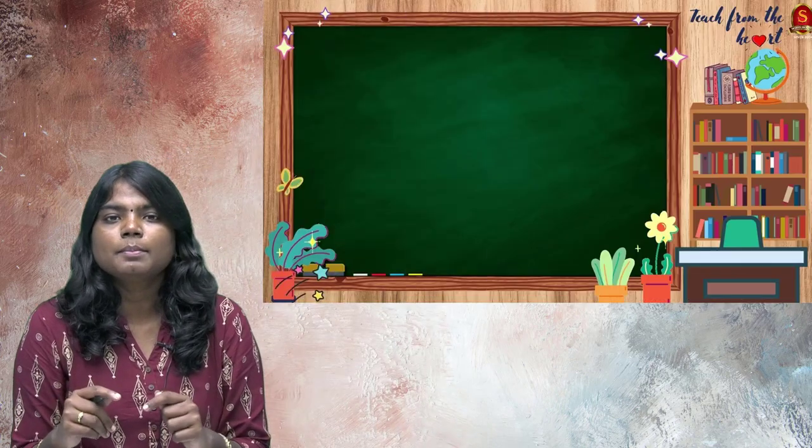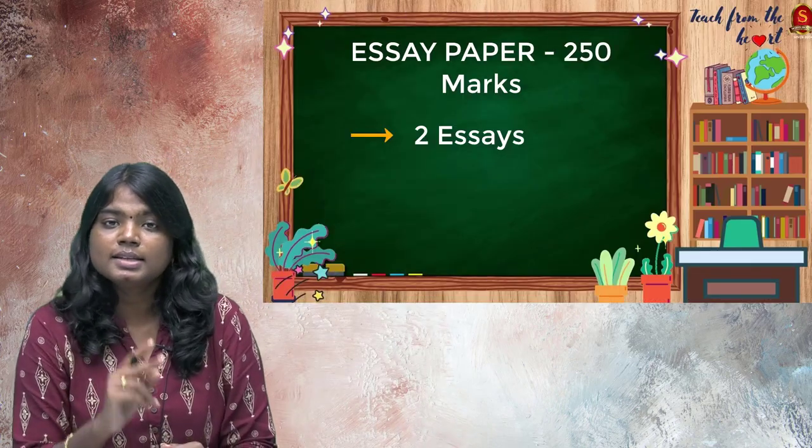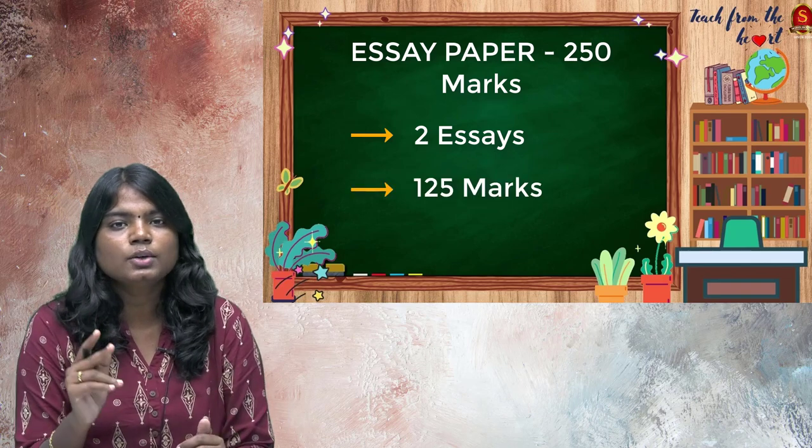First of all let us take the essay paper. As we all know it is an important paper because it fetches you more marks compared to other GS papers. In the essay paper you have to write an elaborate answer. The essay paper is for 250 marks and you are writing only 2 essays, meaning each essay carries 125 marks, so you have to write a lot — elaborately. For this you should be able to put your thoughts into words and these words should be as simple as possible. One more important thing about the essay paper is that you have to stay focused on the topic that is asked.